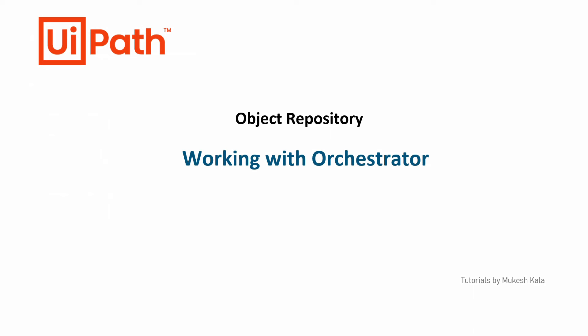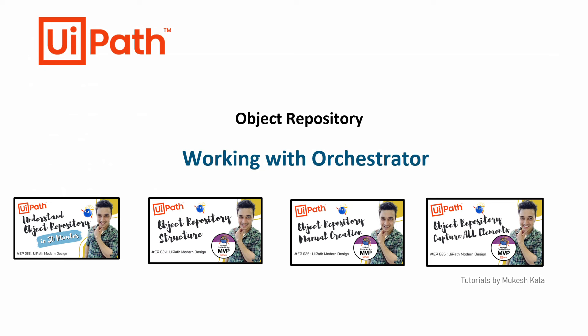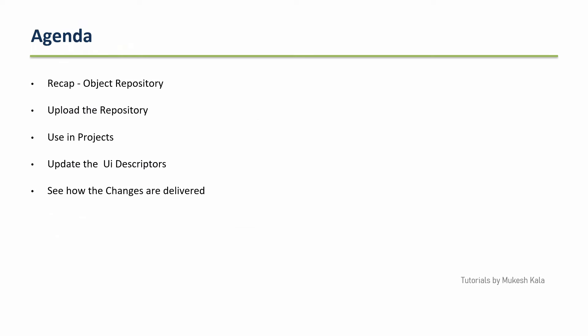Today in this video we are going to continue the object repository and see how as a developer you can work with object repository while working with the orchestrator. In the previous videos we have already seen what exactly is object repository, what its structure is, how to manually create it, and how to capture all the elements. If you are not familiar with any of these, I would request you to watch the previous video — I have posted all the links in the description for your reference.